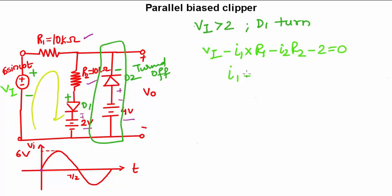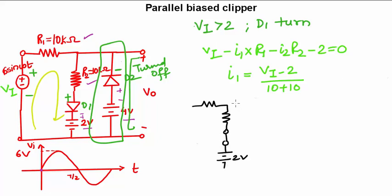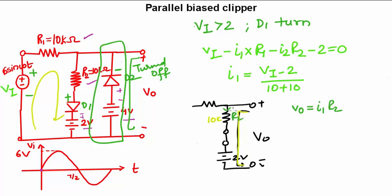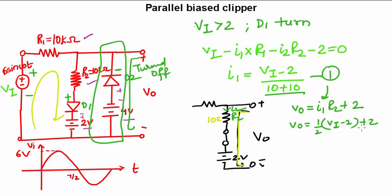After simplification, I1 = (Vi − 2) / (10 + 10). Since D2 is open circuited, the circuit has resistance, resistance, a short-circuited diode, and the 2V battery with the output voltage. Applying KVL on the output side with R2 = 10kΩ: Vo = I1·R2 + 2. Substituting I1, we get Vo = ½(Vi − 2) + 2, which simplifies to Vo = ½Vi + 1.